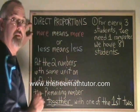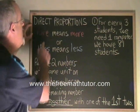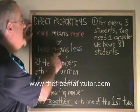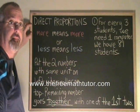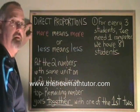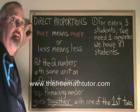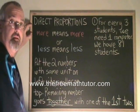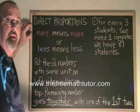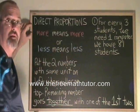This is called a direct proportion. A direct proportion is a more means more situation, or a less means less situation. In this situation, if we have more students, we will need more computers. If we have less students, we will need less computers. That means it is a direct proportion, and this is how you judge the situation and make sure that it's direct.